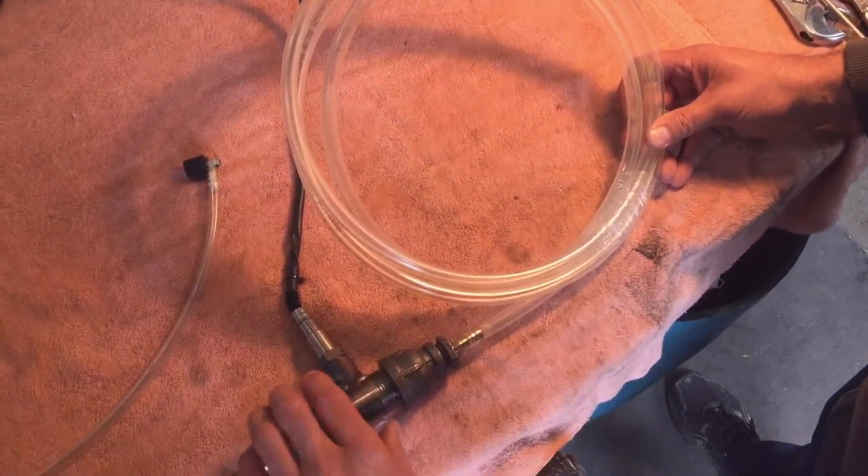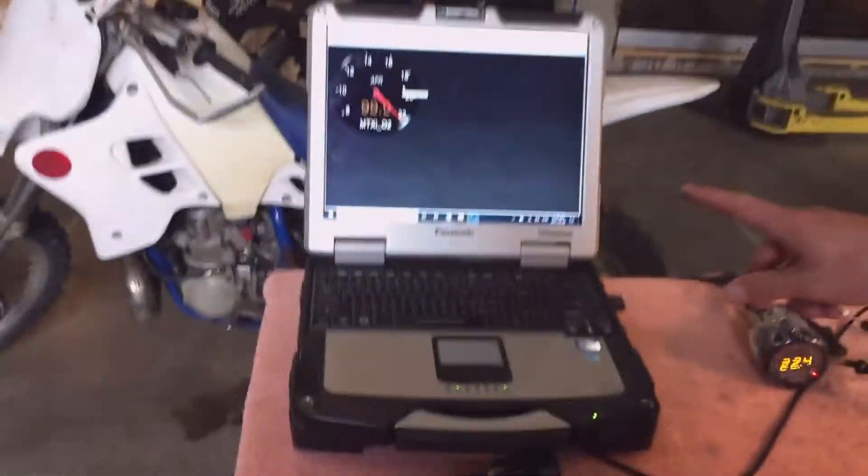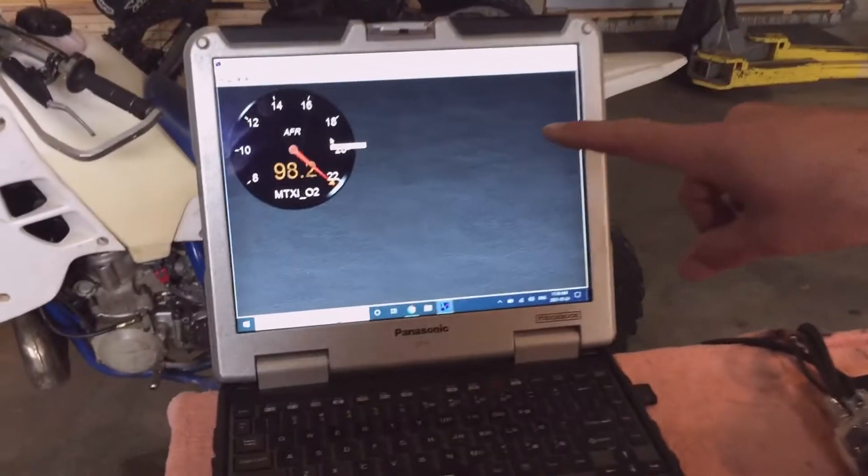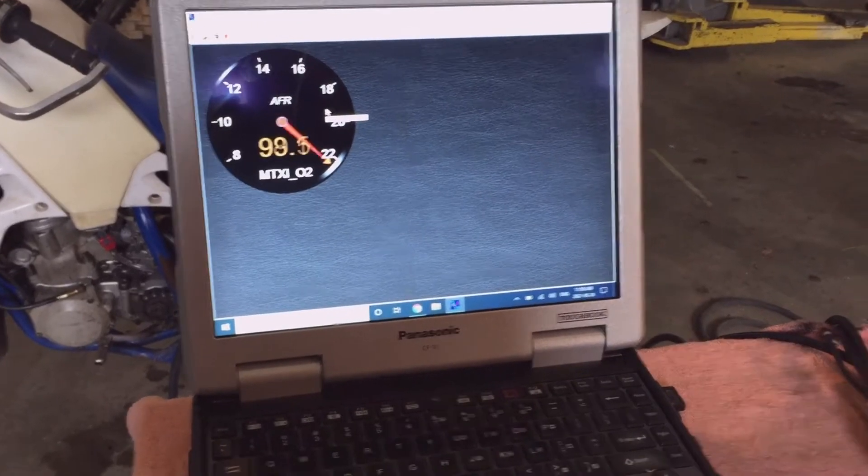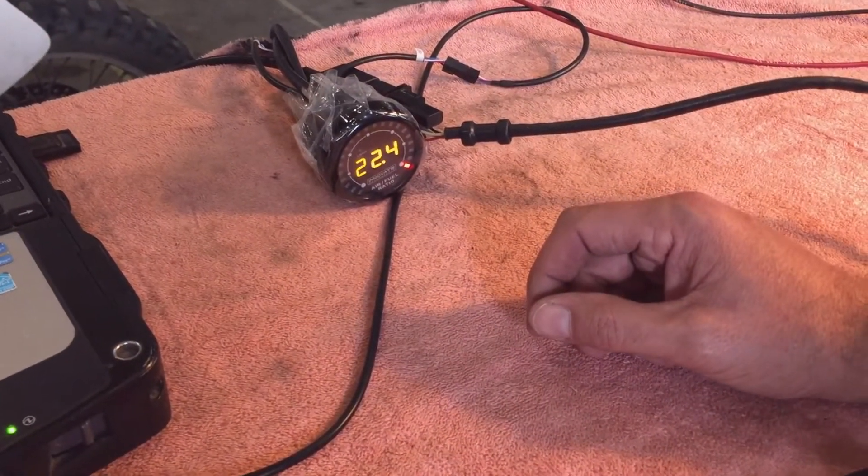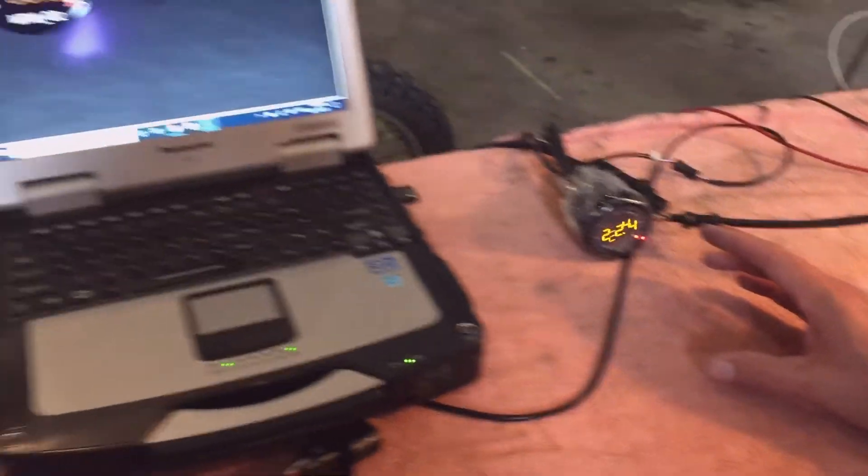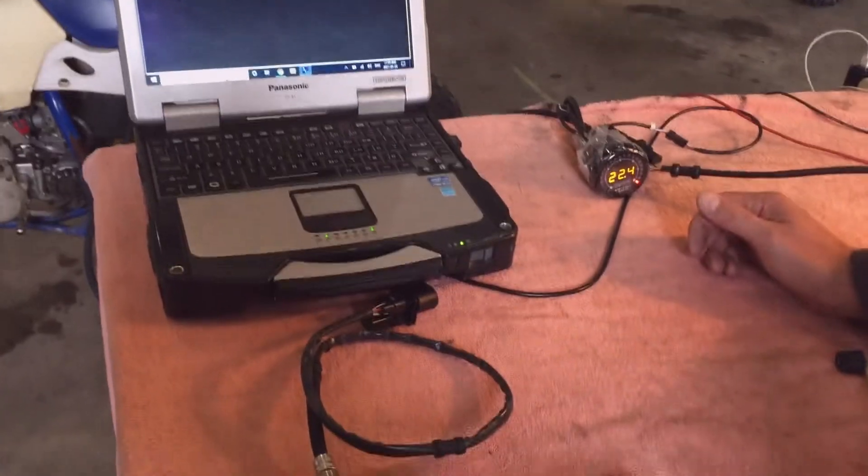As you can see here, we've got our laptop setup. Obviously it's showing super lean because we're out in fresh air; it's not working right now. And then we've got a gauge set up here, and this allows us to look at the startup, the idle, the mid-range, and the high range while we're sitting in the shop.